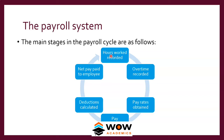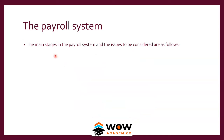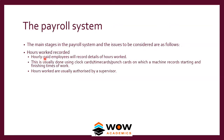The accounts department pays the tax, ESI, and PF, and thereafter the balance amount is paid directly to the employee's bank account. Even for a simple salary calculation, multiple departments are involved: the production department, HR, accounting, the bank, and the employee's account. This system ensures that salary payment flows smoothly. The main stages in the payroll system — hourly paid employees record details of hours worked, usually done using clock cards, time cards, or punch cards on a machine that records starting and finishing times.